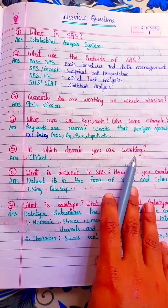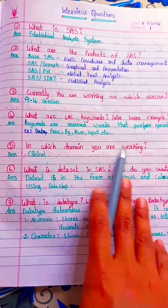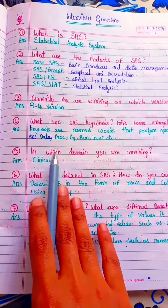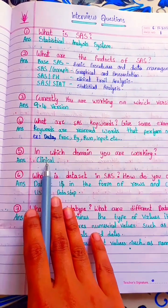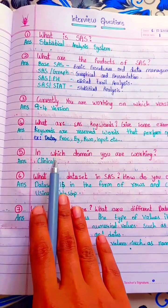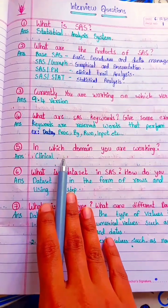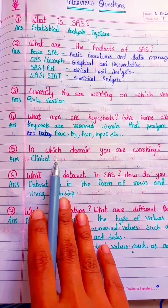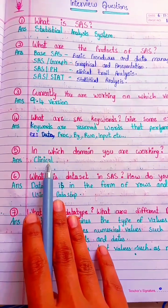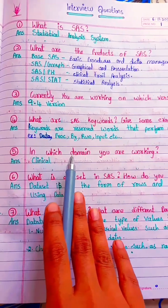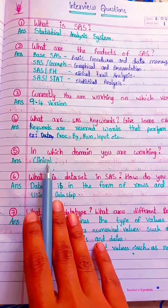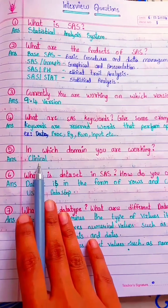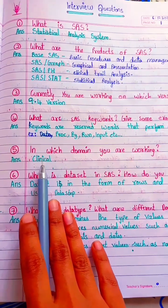In which domain are you working? Domain is nothing but the industry. We have a clinical domain, banking domain, finance domain, and agriculture domain. So in which domain you are working, you need to write clinical, banking, or finance. If you're working in clinical, then you need to say clinical.